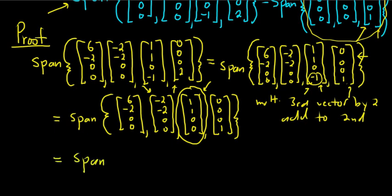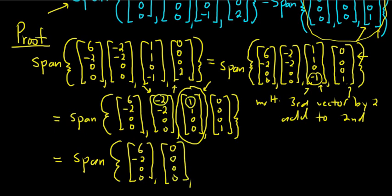Let's go ahead and do that because that's clear. You can eliminate a vector completely. So this is the span. Let's keep that first vector, [6, -2, 0, 0]. And again, we're multiplying the third vector by 2 and adding it to the second vector. So it's going to become [0, 0, 0, 0]. Because this is 2 plus -2 and that's 0. Beautiful stuff. And then we keep the other 2.